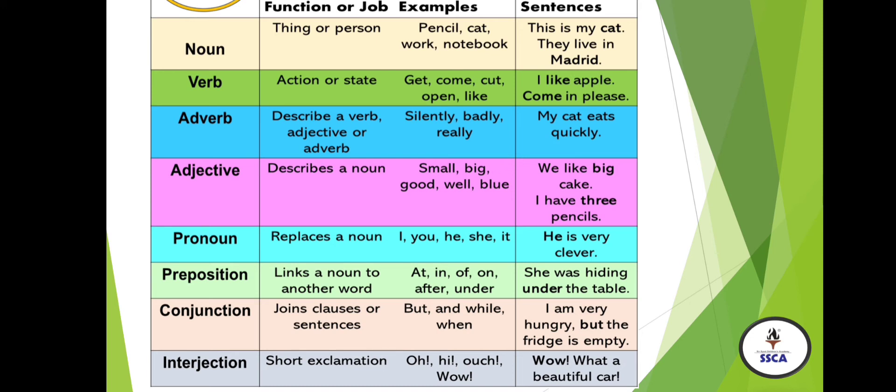Interjection is all about short exclamations. You can say these are certain words to express happiness or sadness in a sentence. Examples: oh, hi, ouch, wow. Example sentence: 'Wow, what a beautiful car!' Here, 'wow' is the word which expresses the sentence. In this way, we have a quick review of all the parts of speech.